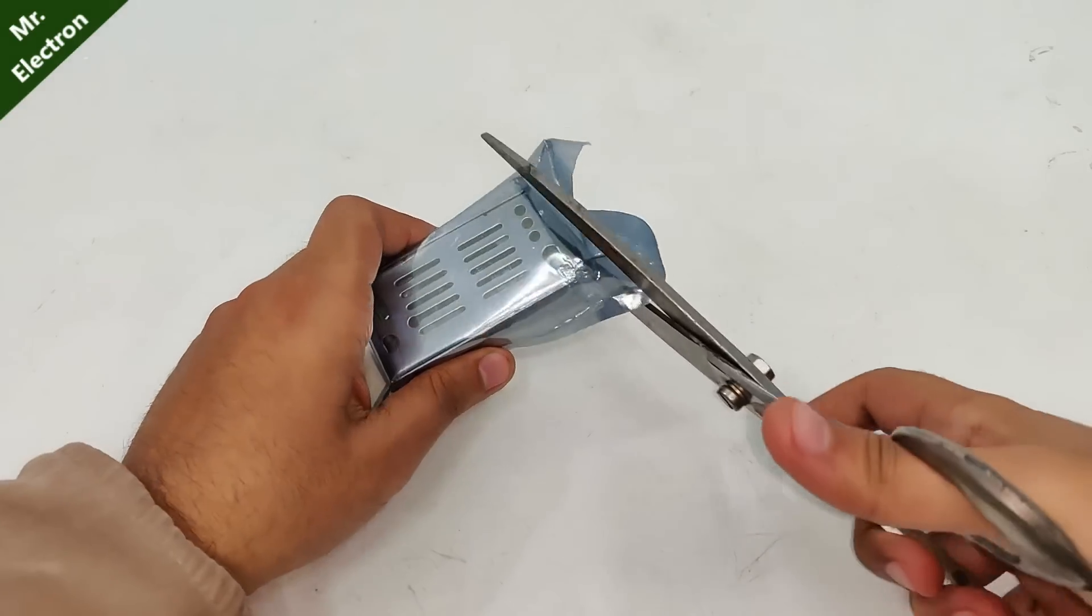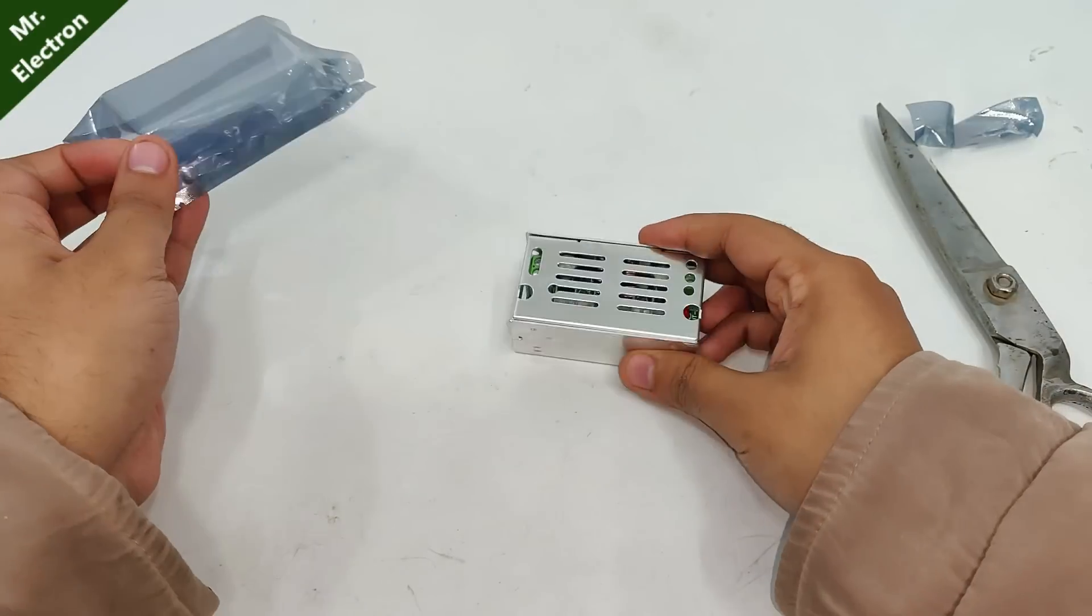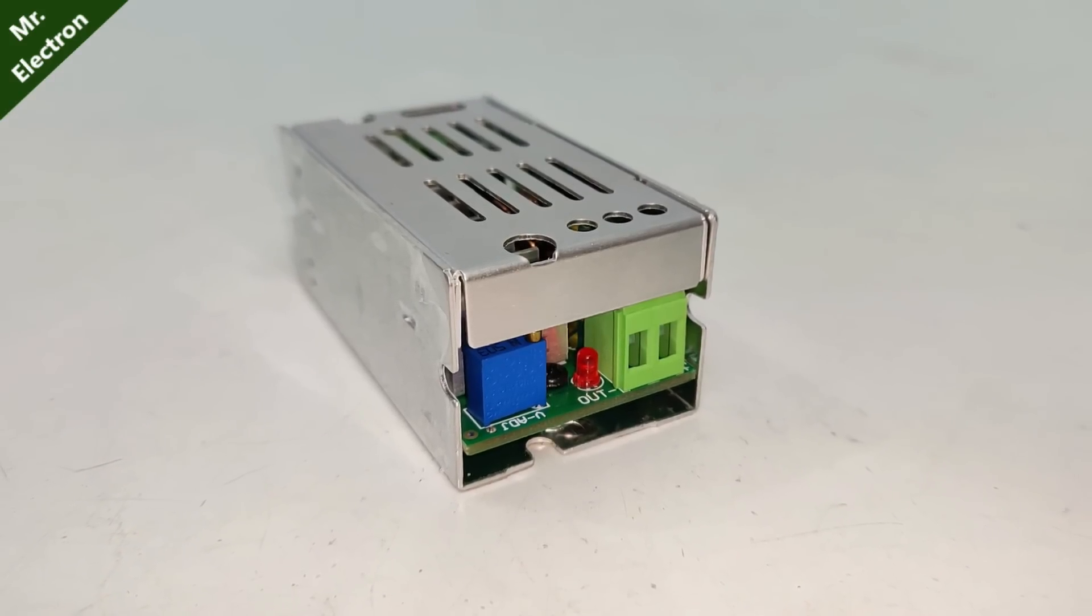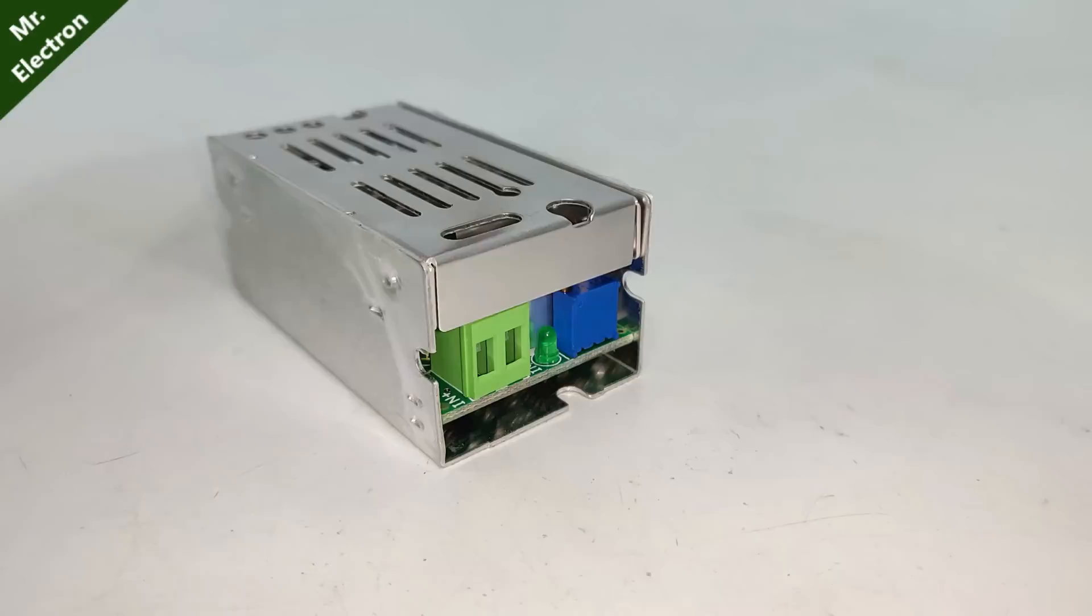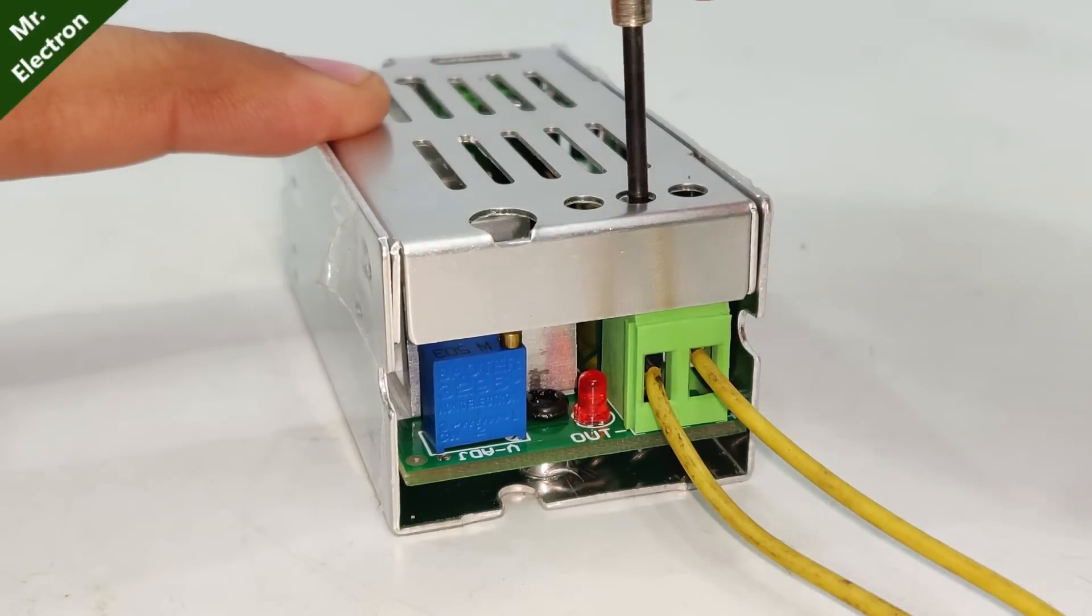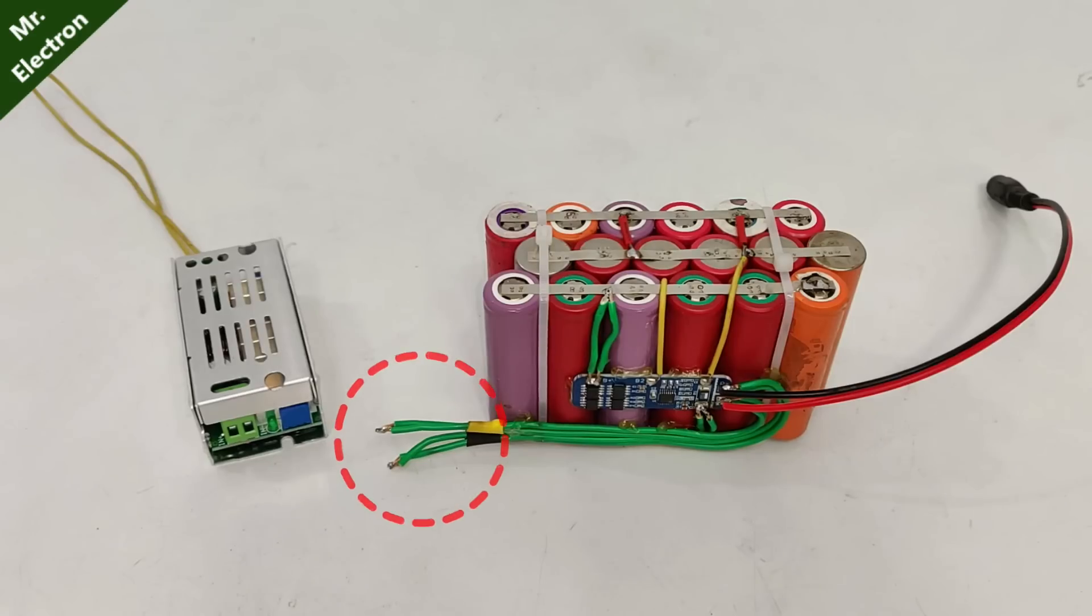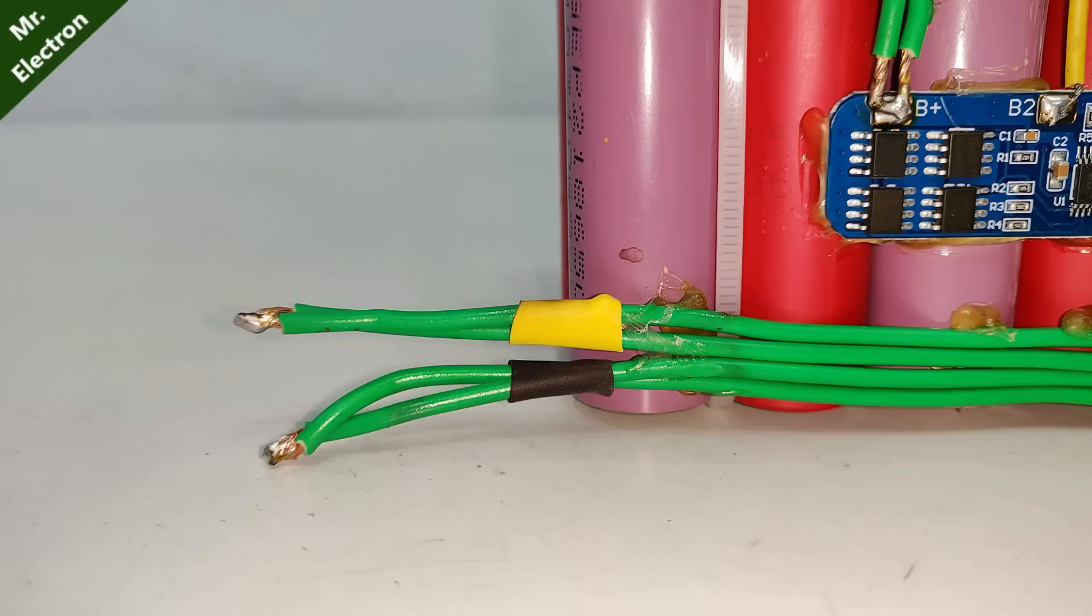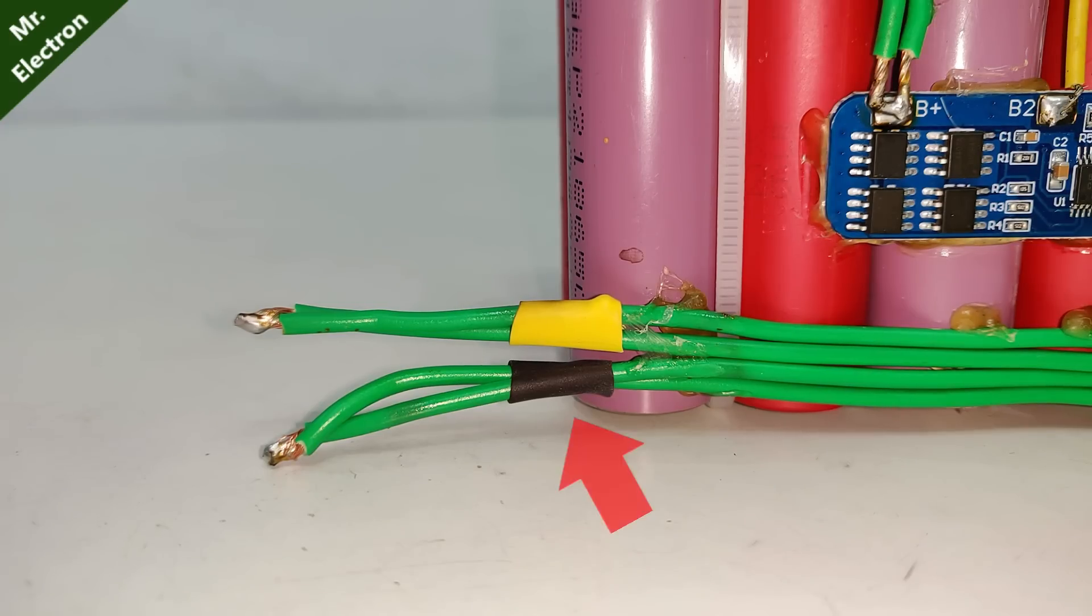After that I will be using this buck boost converter, and you can use any buck boost converter that you have. This is the output side with red LED and this one is the input side with green LED. Yellow wires to the output. Now the battery output will be connected to the input side of the buck boost converter. Here the yellow pair is for positive and black for negative.